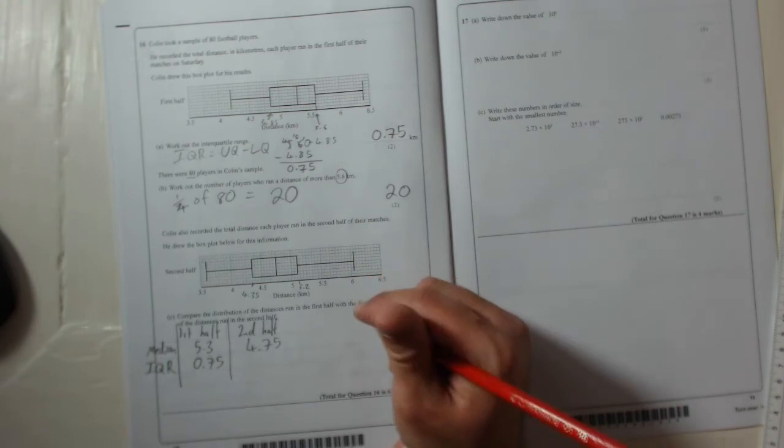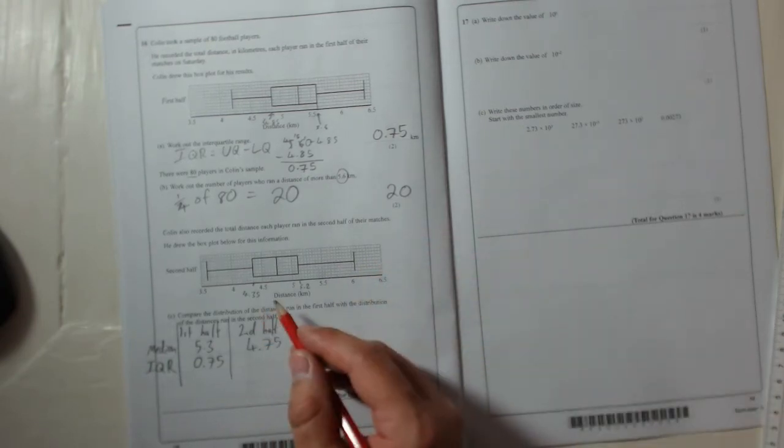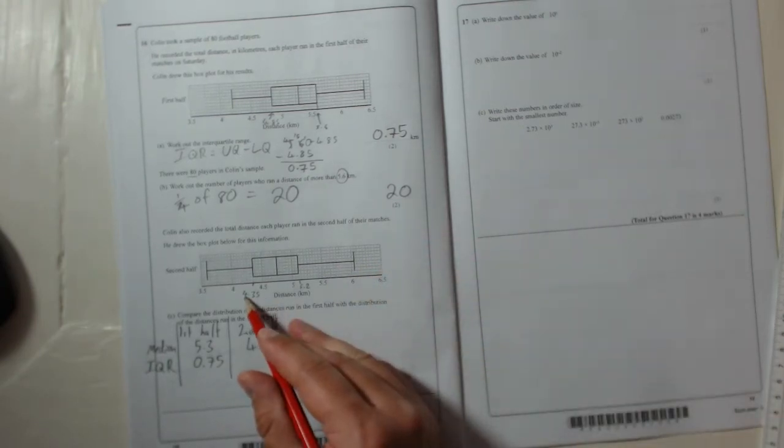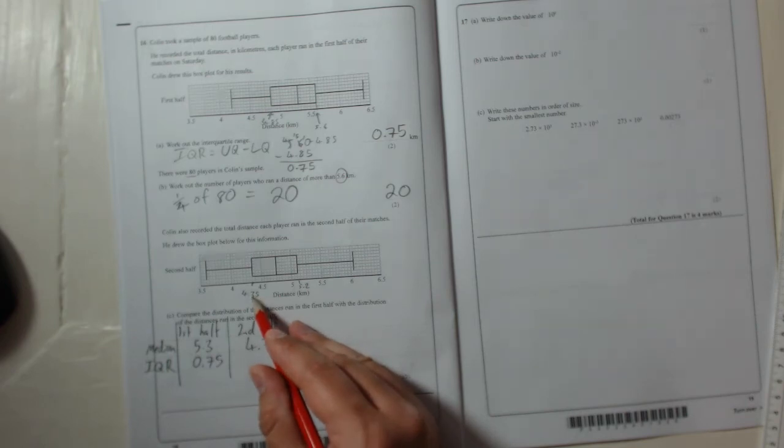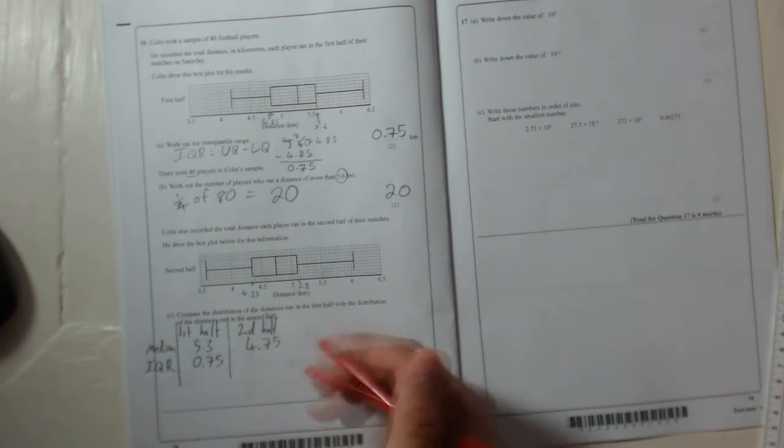So let's just do 5.2 take away 4.35. It's 0.65 to get up to 5 from 4.35, so 0.65. Add to this gives 5, add 0.2 more, so it's 0.85.